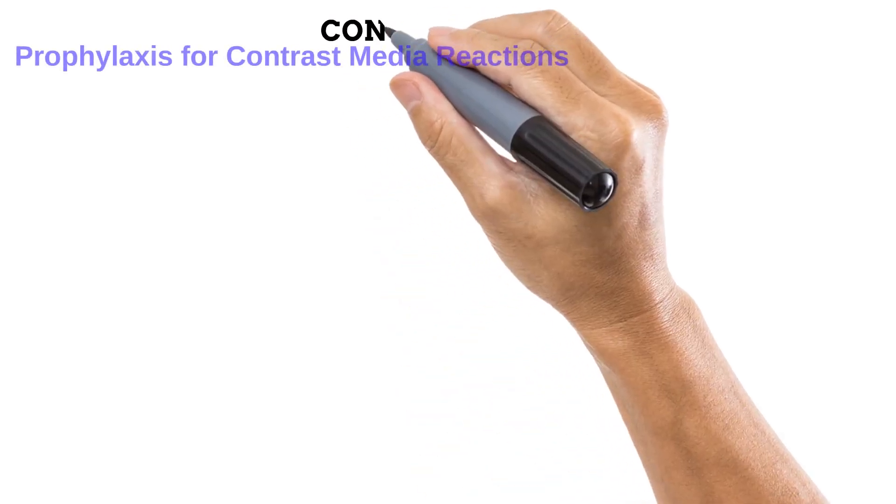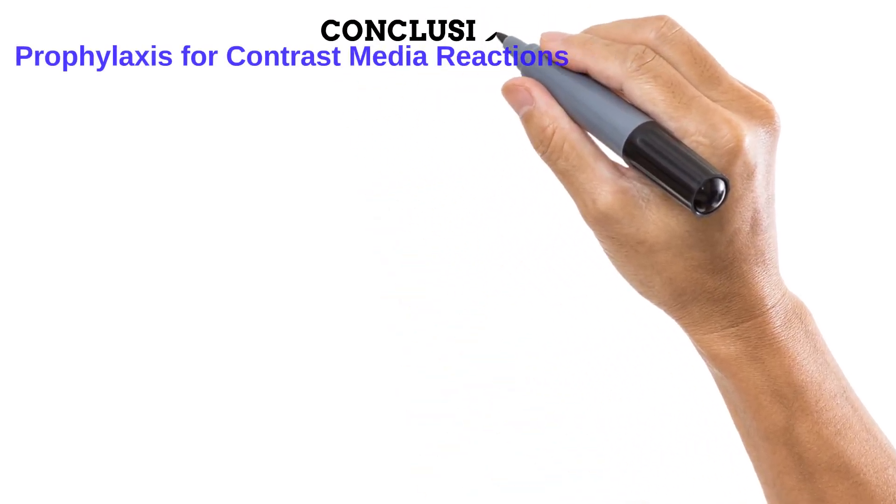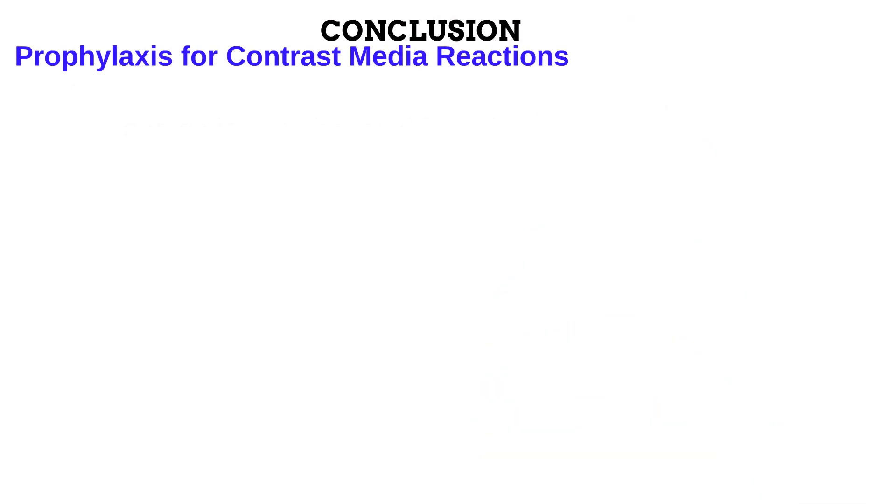Over the last three videos, we have looked at the various types of contrast media reactions and the different mechanisms by which they occur. Now, there are some options available to radiographers to help prevent a contrast media reaction from occurring. These strategies are used in situations where a patient is more likely to suffer a reaction, like in the high-risk group patient. Let us conclude this video by looking at some of these preventive measures.